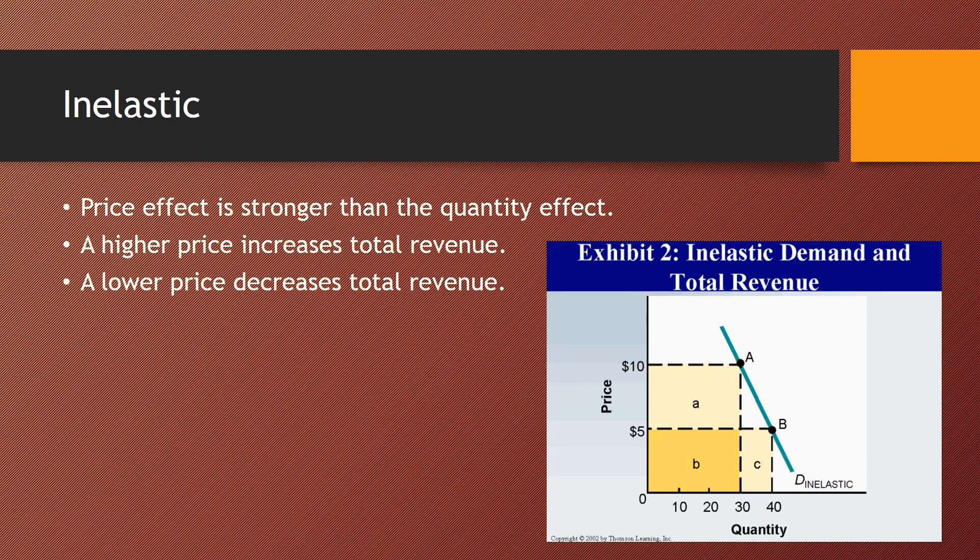Moving down to five dollars, quantity demanded increases but only from thirty to forty. So revenue is five times forty — two hundred dollars. They cut their price in half and actually decreased total revenue. With inelastic demand, a higher price increases total revenue because the price effect is stronger. Going from B to A — five to ten dollars — revenue rises from two hundred to three hundred dollars. Producers can raise prices and still come out ahead because people mostly keep buying.